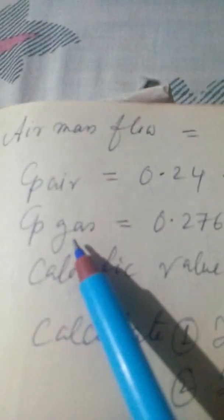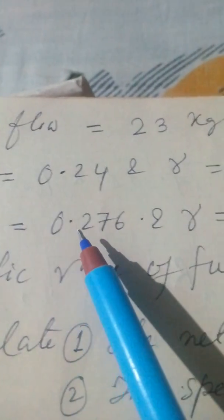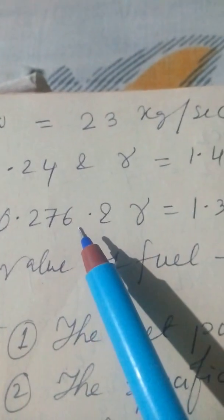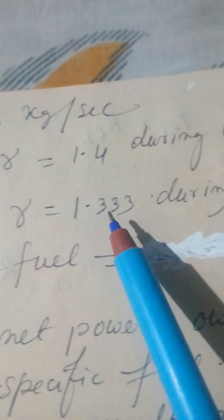And CP of gas is equal to 0.276. And gamma is equal to, for gas, 1.333 during heating and expansion.